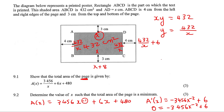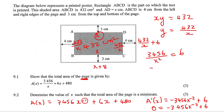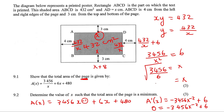Now, to find the minimum, we make the first derivative equal to zero. We take the 3456 over to the left. Then we multiply X squared up to the top. Then we divide both sides by 6. And then we just take the square root to get X alone. And it works out beautifully — I get X equals 24 centimeters.